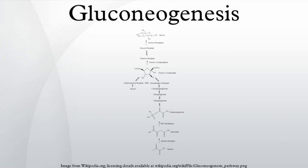Gluconeogenesis is a metabolic pathway that results in the generation of glucose from non-carbohydrate carbon substrates such as pyruvate, lactate, glycerol, and glucogenic amino acids.